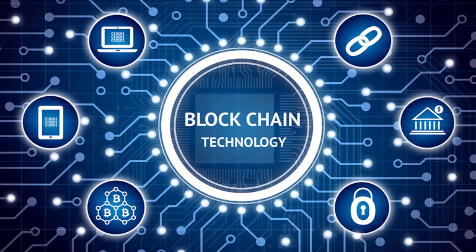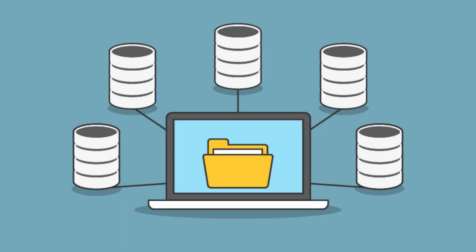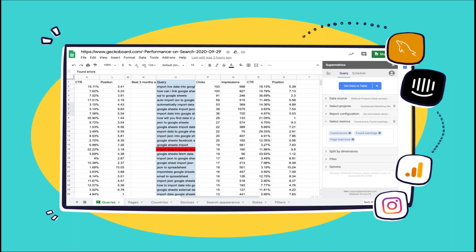and it definitely can be, but its core concept is really quite simple. A blockchain is a type of database. To understand blockchain, it helps to first understand what a database actually is. A database is a collection of information that is stored electronically on a computer system. Information or data in databases is typically structured in table format to allow for easier searching and filtering for specific information.